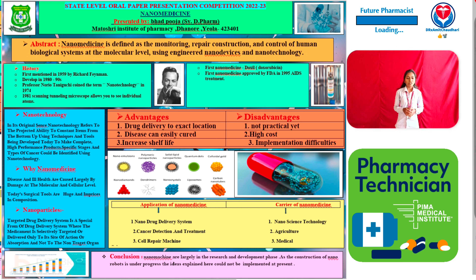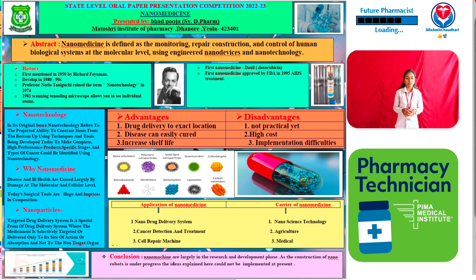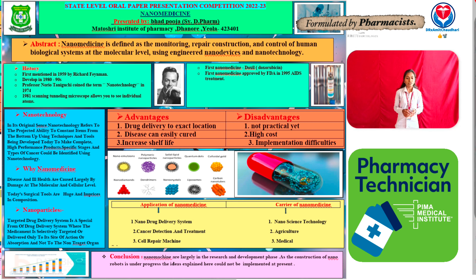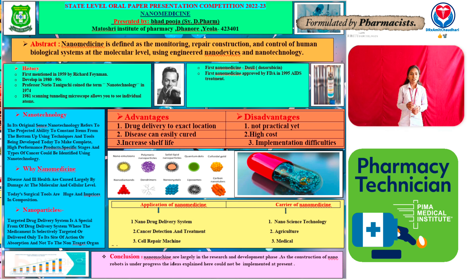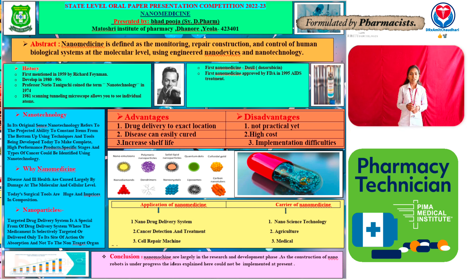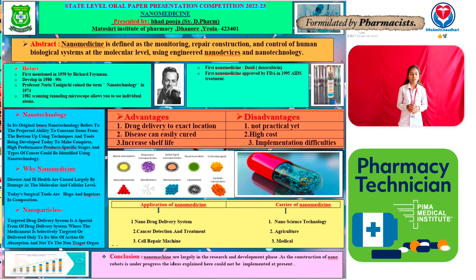The definition of nanomedicine is: nanomedicine is defined as the monitoring, repair, construction, and control of human biological systems at the molecular level, using engineered nanodevice technology. Specific stages and types of cancers could be identified using nanotechnology. Why nanomedicine?